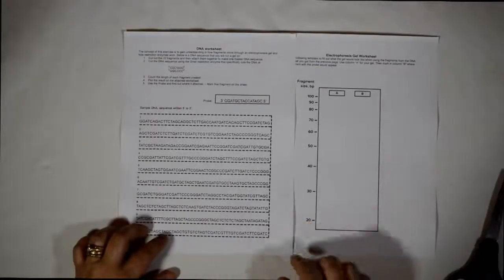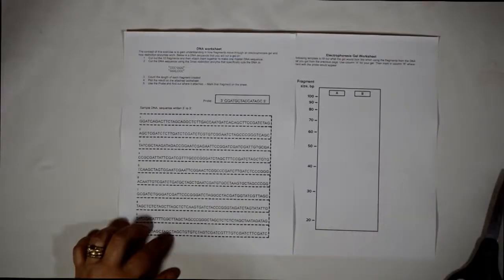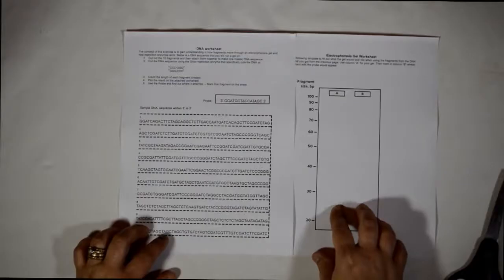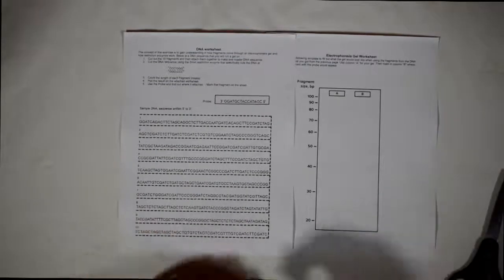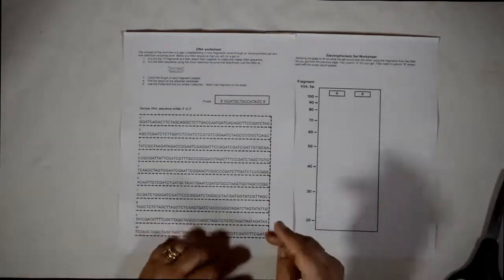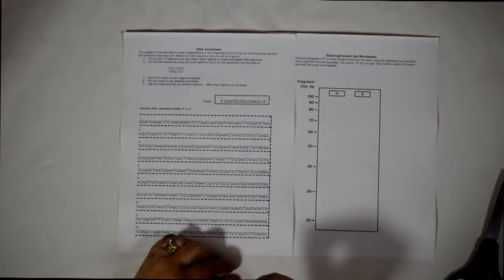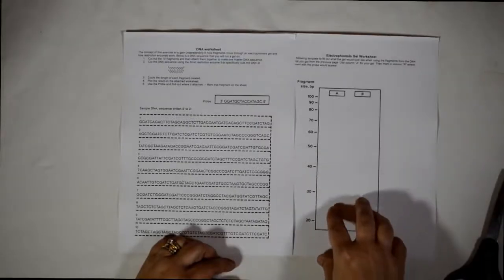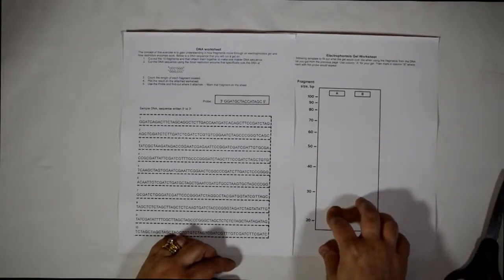The idea of this assignment is to show you the concept of how the fragments will move on electrophoresis gel. You're going to produce a DNA sequence and then you're going to use the restriction enzymes to cut that DNA sequence and then you're going to plot that on the electrophoresis.